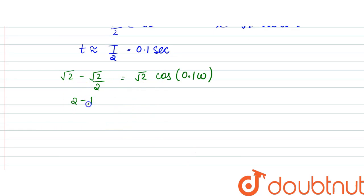So, root 2 gets cancelled, so it would be 2 minus 1 by 2 would be equal to cos 0.1 omega.